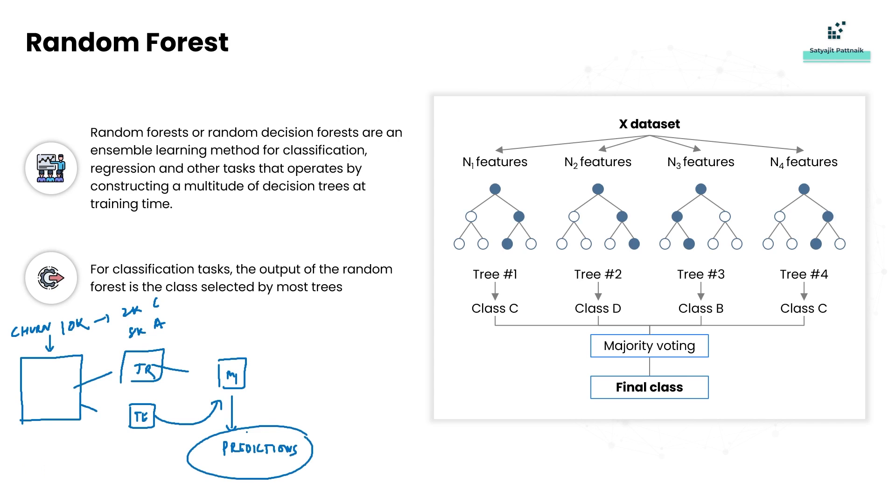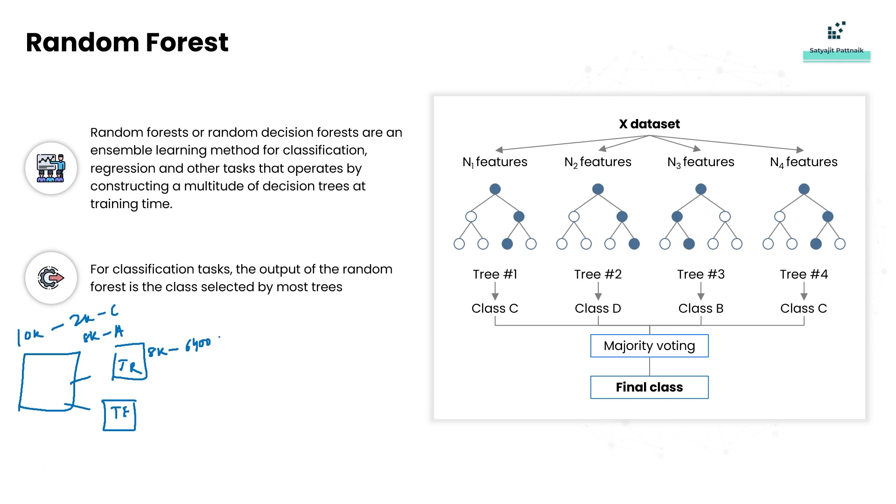That's how it works, right? Now what happens in random forest is same example: 10,000 records, 2,000 churned and 8,000 active. You do the same thing - you create your training data and testing data. Let's say your training data has 8,000 records. Let's say out of them 6,400 are active and 1,600 are churned. And here again 2,000 records, around 1,600 active and around 400 churned.